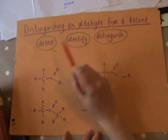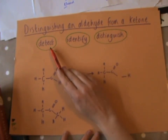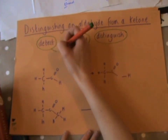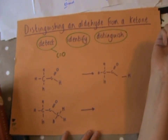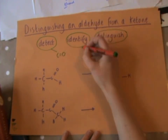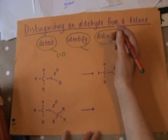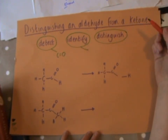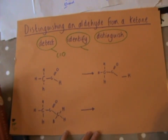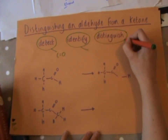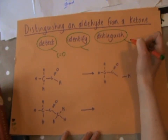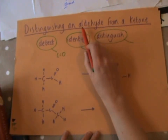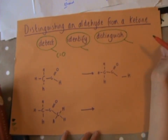Today's topic is distinguishing an aldehyde from a ketone. Before we start, I want us to think about the three words we've had in our topics so far: detect, identify, and distinguish. We've detected whether something is a carbonyl compound, then identified the carbonyl compound — giving it its exact name or identity — and today we're going to look at something that distinguishes. When you have 'distinguish,' the next word is often 'between,' and we're going to distinguish between an aldehyde and a ketone.